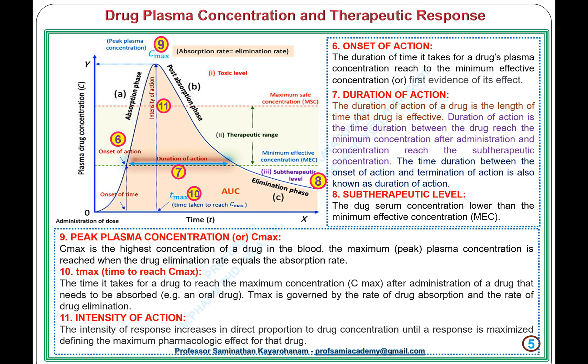10. T-Max, time to reach C-Max: the time it takes for a drug to reach the maximum concentration (C-Max) after administration of a drug that needs to be absorbed, for example an oral drug. T-Max is governed by the rate of drug absorption and the rate of drug elimination. 11. Intensity of Action: the intensity of response increases in direct proportion to drug concentration until a response is maximized, defining the maximum pharmacologic effect for that drug.